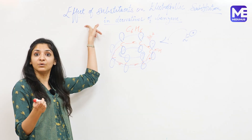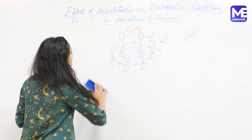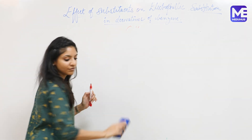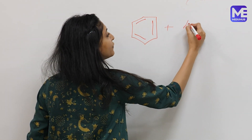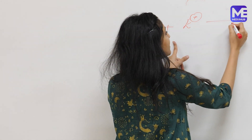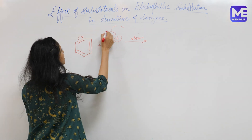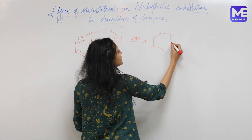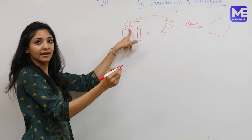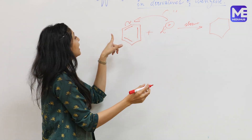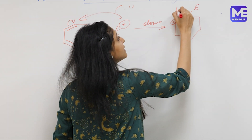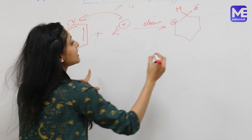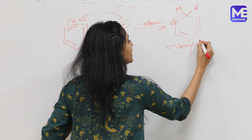We need to understand the mechanism because it is very important for understanding the effect of substituents when one group is already present on benzene. The first step is the attack of an electrophile on the benzene molecule — this is the slow step and the rate-determining step. This leads to the formation of a sigma complex. The two pi electrons shift to the carbon where the electrophile attacks, giving that carbon a positive charge. This intermediate is called a sigma complex, or arenium complex.